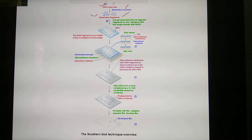Use gel electrophoresis to separate fragments by size. Denature DNA into single strands. DNA fragments are invisible at this stage. Look at this part.